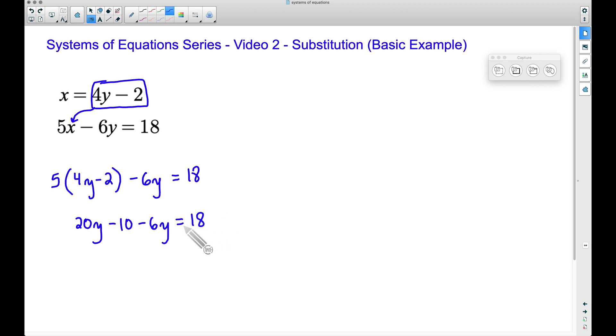Now we want to work on getting Y by itself. What I would do here is combine like terms: 20Y minus 6Y, that's 14Y. Bring down your minus 10, and this is going to be equal to 18.